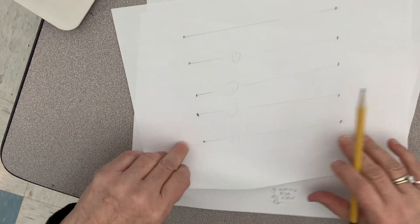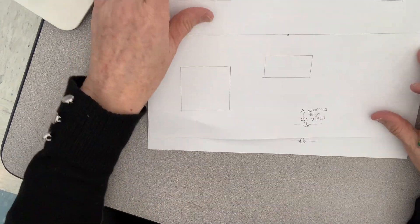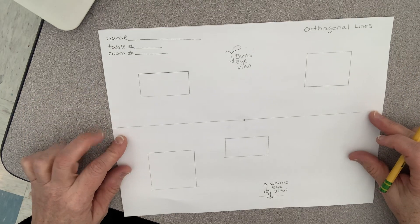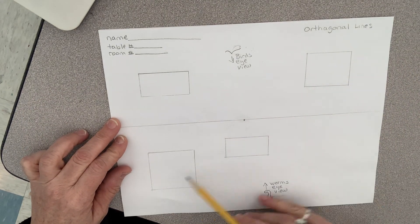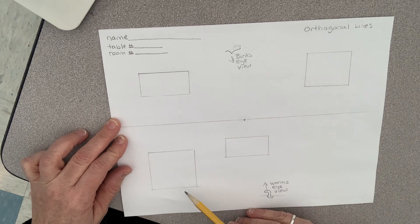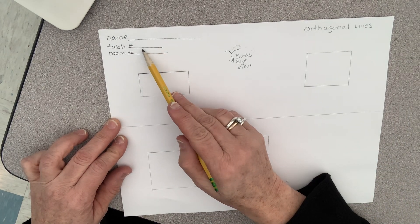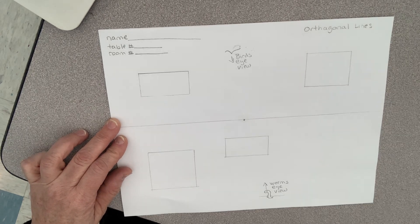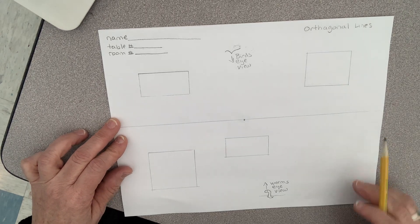If you've done that, put that aside. I will give you a wonderful little sheet that looks like this and it has these four squares on them, not boxes but just squares. Make sure you put your name, your table number, and your room number on them. If you haven't done that, pause the video and do that.